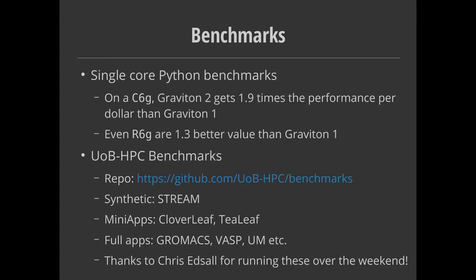I did a few benchmarks myself — I'm not an HPC or benchmarking expert, but I generally run Python scripts for data analysis, so I wanted to get a sense for my workload of what kind of difference we'd see. Comparing the Graviton1 to the Graviton2 on the C-line — the compute-optimized Graviton2 — we get almost twice the performance per dollar. It is more than twice as fast and slightly more expensive, but the price difference is well worth it. Even the memory-optimized R6Gs, which are a lot more expensive, are still better value for money than the Graviton1s. So it is worth moving to the Graviton2s if you're using Graviton1s at all.